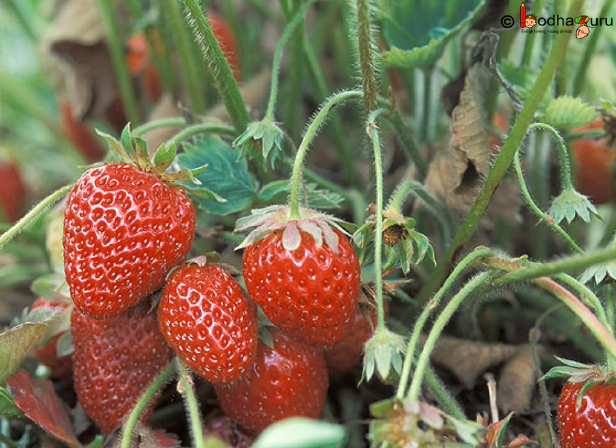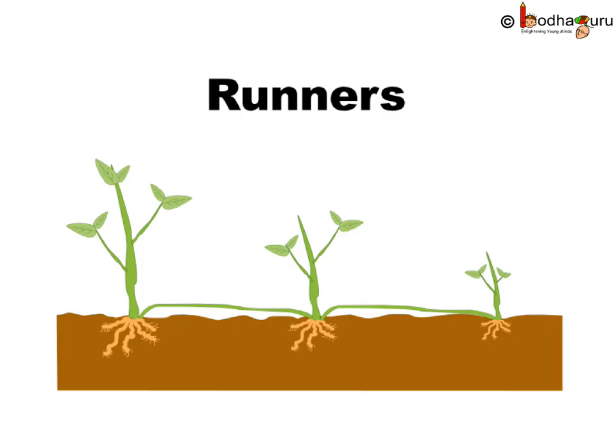Some plants like strawberry or normal grass have long stems that run along the ground. New plants grow from these stems. These are known as runners.